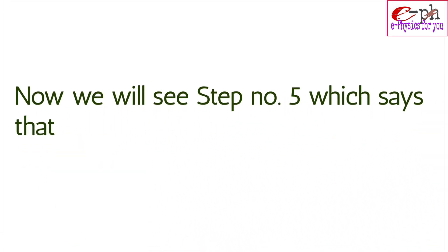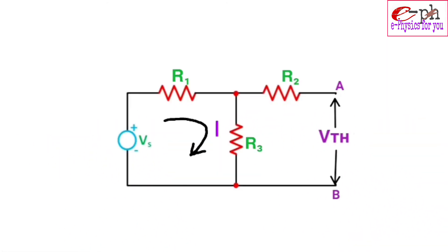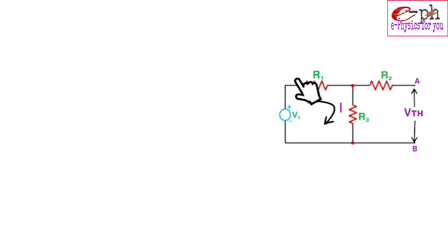Step 5 says to find the equivalent voltage by circuit analysis. We calculate the value of equivalent voltage Vth across the terminal. Since the AB terminal is open-circuited, no current can flow through resistance R2. So the voltage across the AB terminal is the same as the voltage drop across R3, as they are in parallel. Applying KVL in this circuit, we get from this loop: